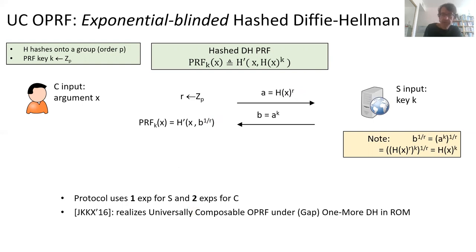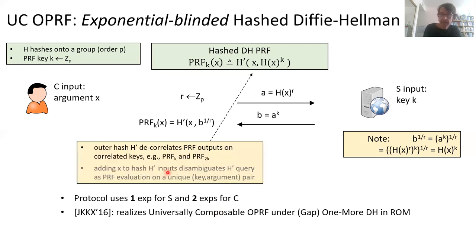In our paper with Oculus GIS, we showed that this implements a very strong notion of universally composable OPRF. In particular, that OPRF has the property that it is independent — every different key input by the server creates another instance of a random function. If there were no outer hash, that wouldn't be the case, because the two functions for keys K and 2K would be obviously correlated — the values of one would be squares of the values of the other. Likewise, entering X in the hash disambiguates so that every hash query corresponds to a unique argument-key pair.